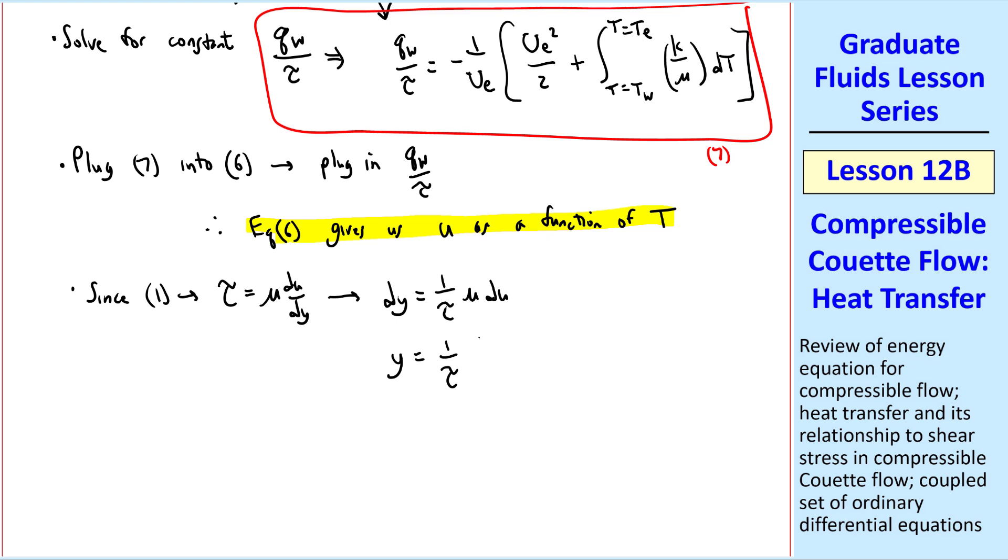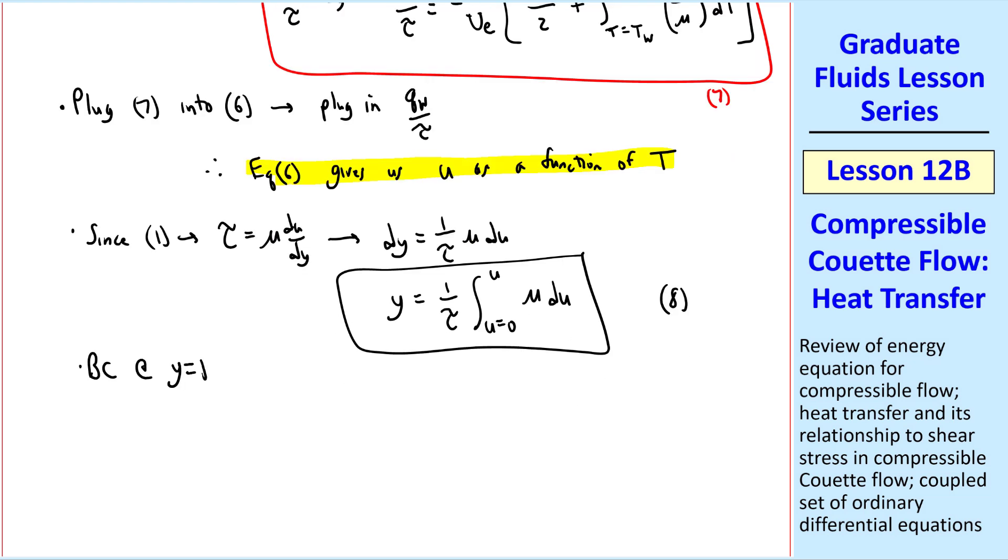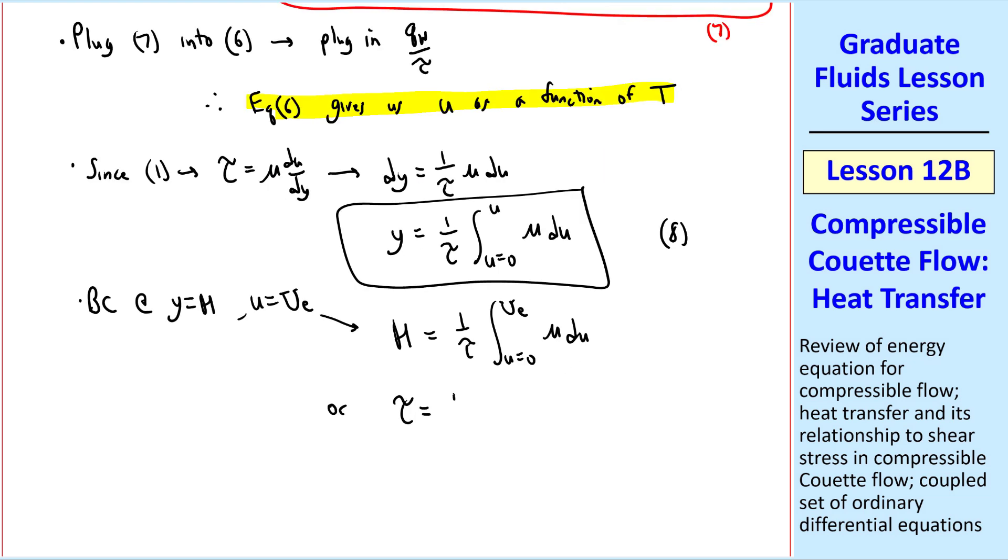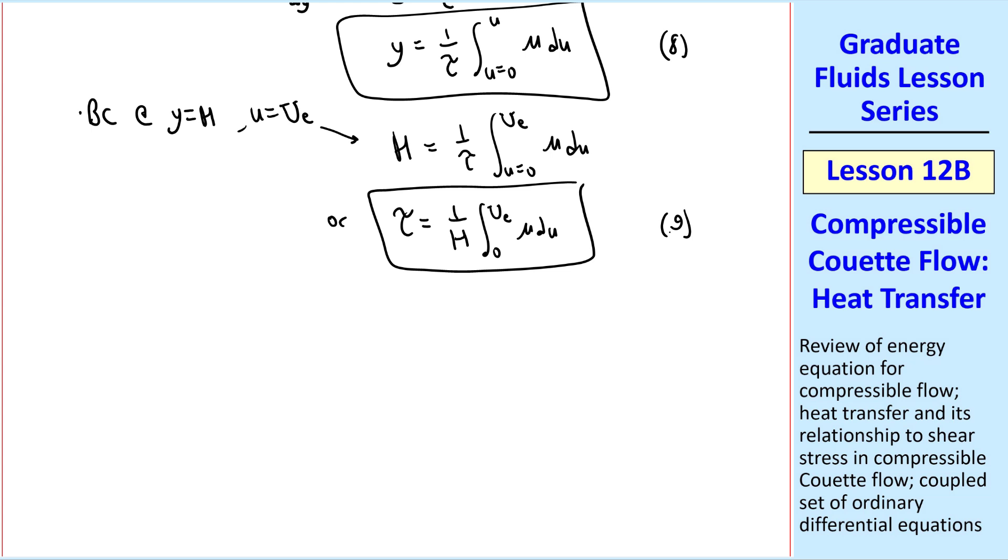Since equation 1 told us that tau equal mu du dy, dy is 1 over tau mu du, which we can integrate to get y equal 1 over tau, since tau is a constant, integral from u equal 0 to u at some general y location, mu du. This is equation 8, but again at the upper wall where y equal h, u equal ue, so h is equal to 1 over tau, integral from 0 to ue of mu du, or rearranging, tau is 1 over h, integral of 0 to ue mu du, which I'll call equation 9.